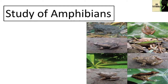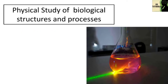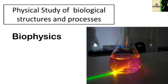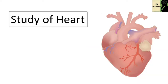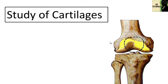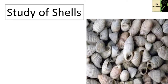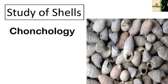The study of amphibians is called batrachology. The physical study of biological structures and processes is called biophysics. The study of the heart is called cardiology. The study of whales and dolphins is called cytology. The study of cartilages is called chondrology. The study of shells is called conchology.